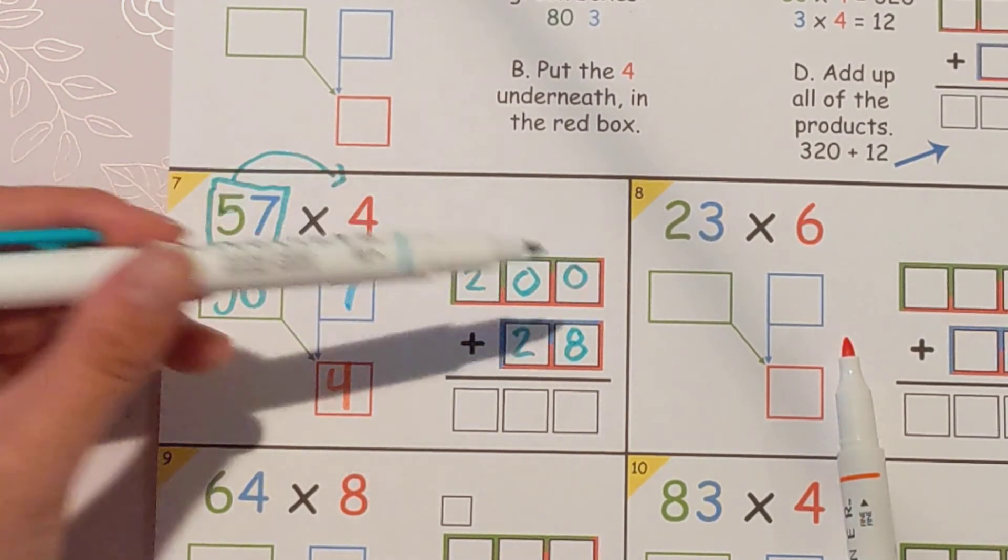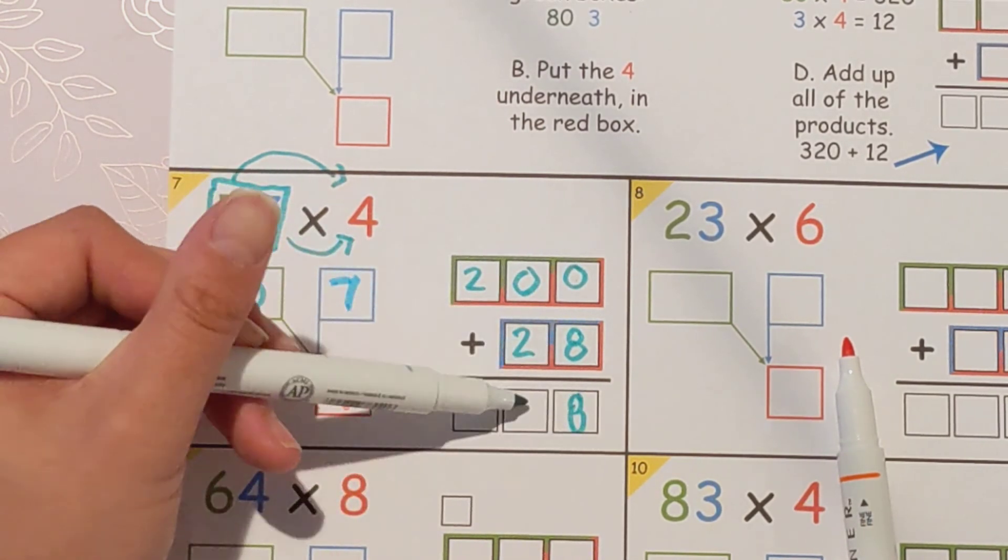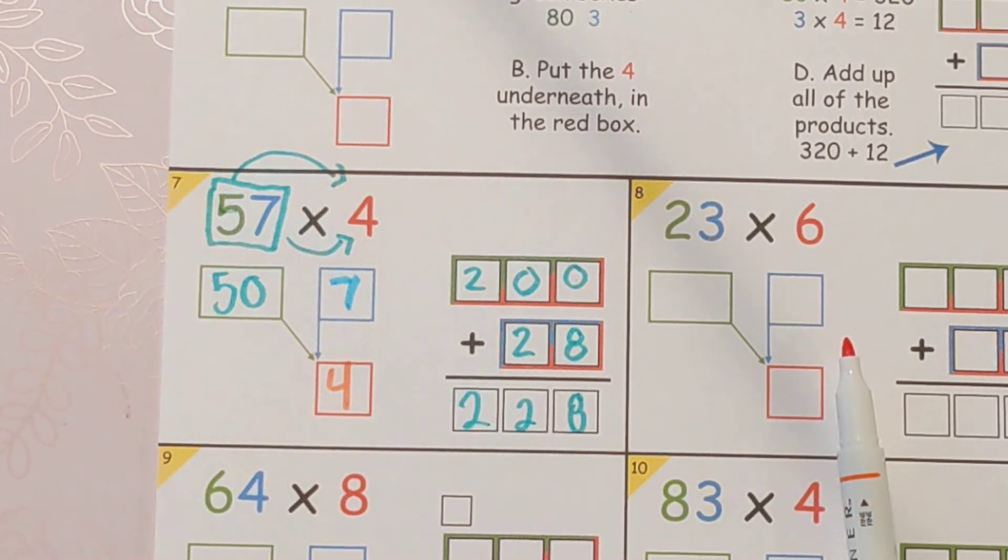So then you're just going to go ahead and add zero plus eight is eight. Zero plus two is two and two plus nothing is also two.